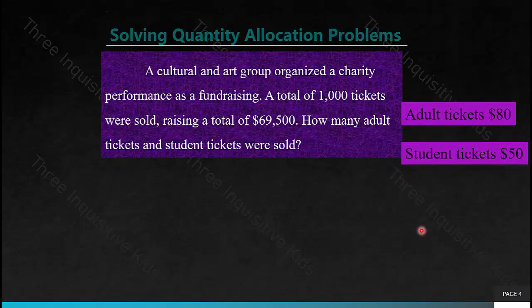Solving Quantity Allocation Problems. A cultural and art group organized a charity performance as a fundraising. A total of 1,000 tickets were sold, raising a total of $69,500. How many adult tickets and student tickets were sold? Each adult ticket costs $80, and each student ticket costs $50.